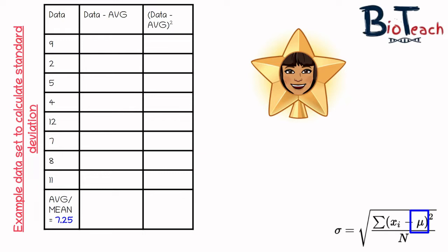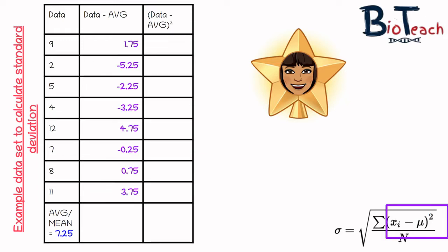The next step is to work out what each data number would be minus the average. So for the first digit, to get 1.75, all I've done is go 9 minus 7.25 and I get 1.75. Then it would be 2 minus 7.25 and I get minus 5.25.